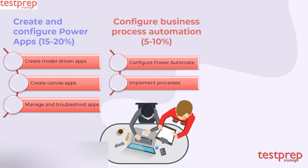Domain 4: Configure business process automation, which comprises 5 to 10 percent weightage in the exam. It includes: 1. Configure Power Automate. 2. Implement processes.